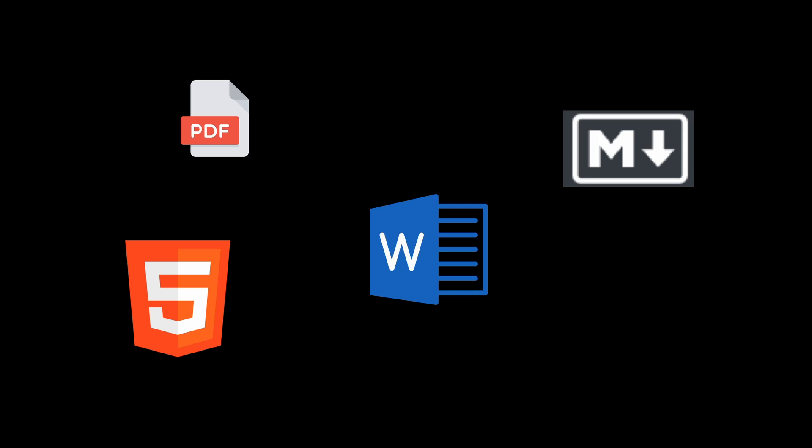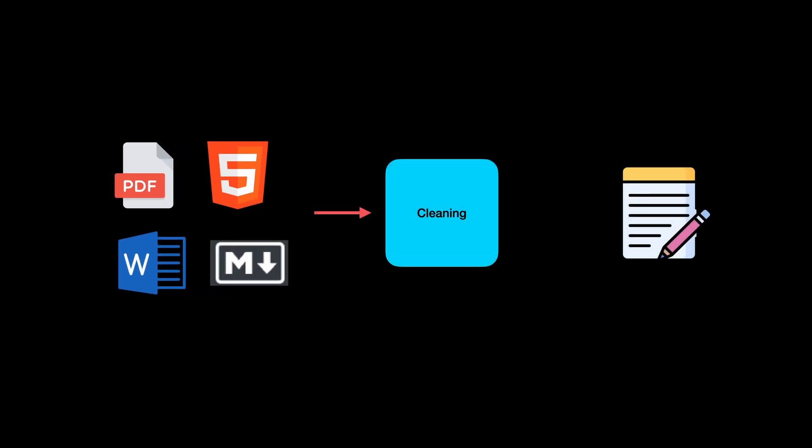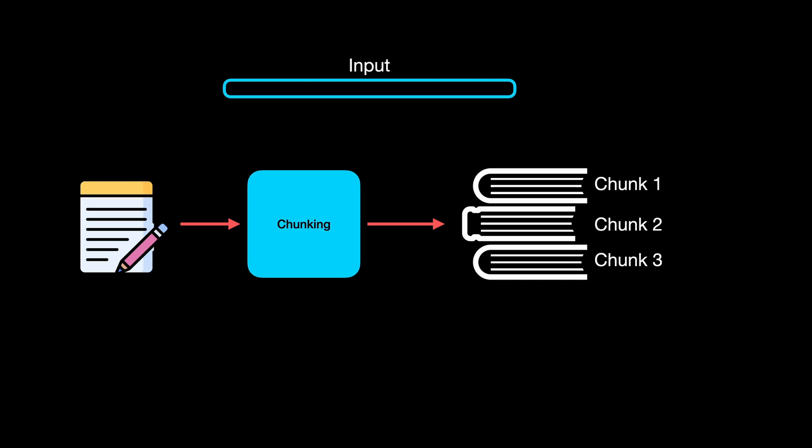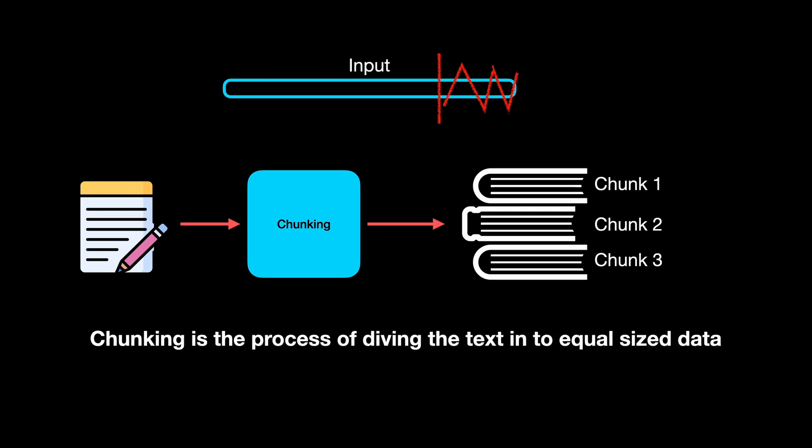It all starts with external data or knowledge, which can be in the form of a PDF document, HTML pages, markdown, or even Word documents. Whatever the format, indexing is the process of cleaning and converting these formats into a standard text representation. LLMs have something called the sequence length, beyond which they cannot take input data anymore. For this reason, the clean text data goes through chunking.